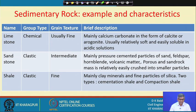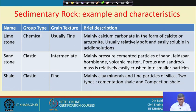Limestone is one example — its group type is chemical, meaning chemical weathering by different agencies is what forms limestone as a sedimentary rock. Grain structure is generally fine, and the brief description is that it is mainly calcium carbonate present in the form of calcite or aragonite, and it is usually relatively soft and easily soluble in acidic solution. Sandstone is clastic, meaning it is from fragmented older rocks. Its grain structure is intermediate — mainly pressure-cemented particles of sand, feldspar, hornblende, and volcanic matter. It is porous and moist sandstone is relatively easily crushable into smaller particles.